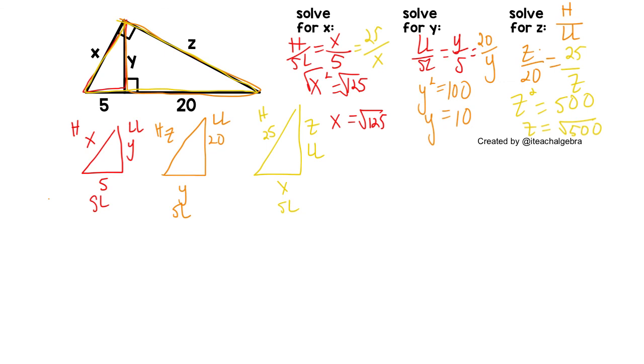So I hope this method helps you draw those triangles out, label them short side, long side, hypotenuse, and then use those ratios to figure out how to find the missing values. If you have any trouble, please let me know. I'm happy to help, and I'll talk to you soon.